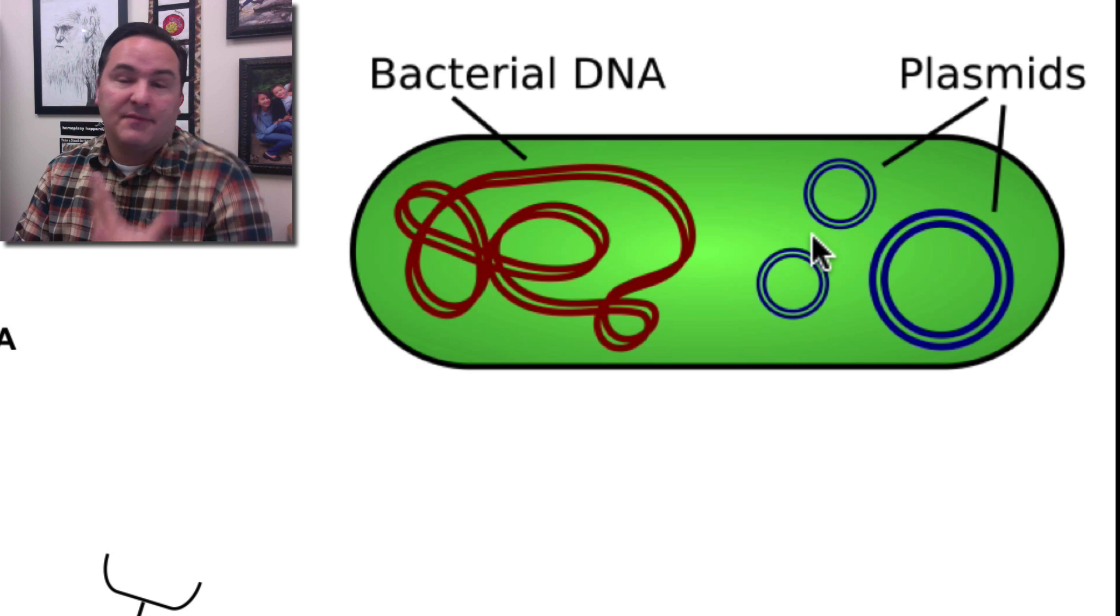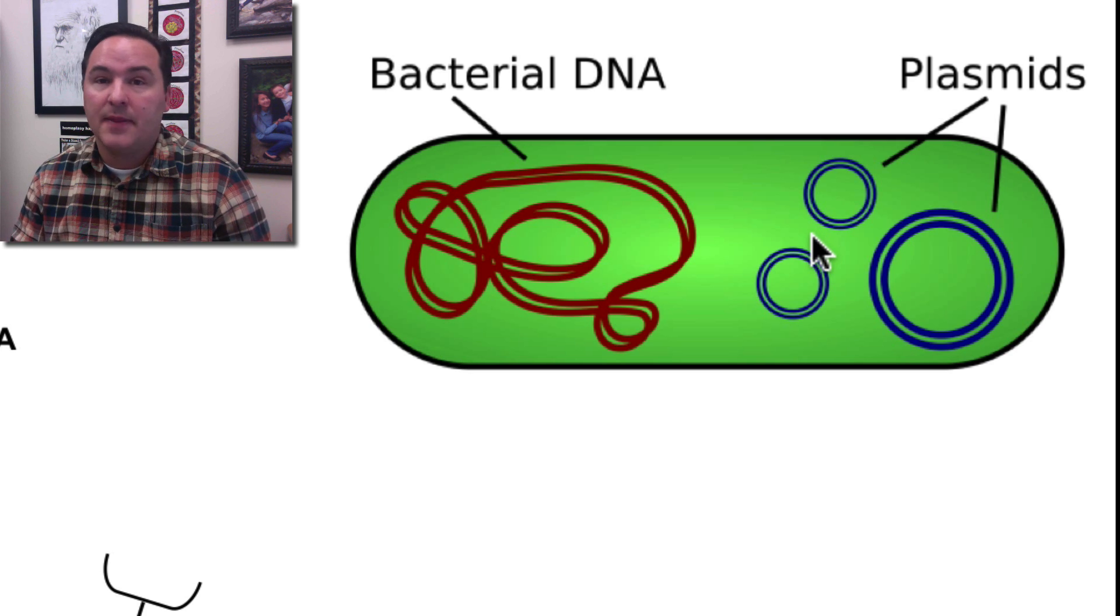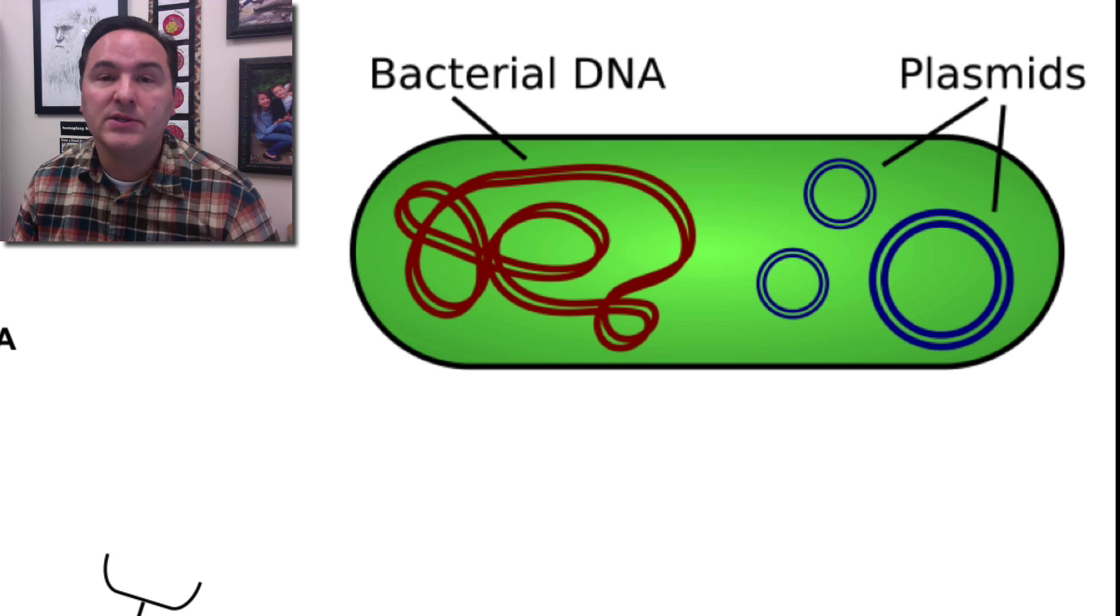These plasmids can have their genes read. If there's a gene on there, it can be read and processed, and proteins can be made from that.